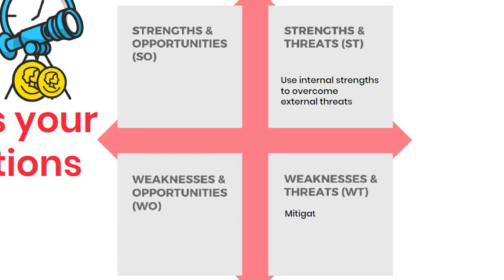Weaknesses and Threats (WT): this quadrant highlights the weaknesses that need to be addressed to avoid threats. The aim is to come up with as many different strategies to mitigate both the internal weaknesses of the organisation, along with external threats. These strategies are also known as defensive strategies, because they essentially defend the organisation from deterioration and potential collapse. Put these into place to protect yourself from loss. However, don't rely on them to create success.